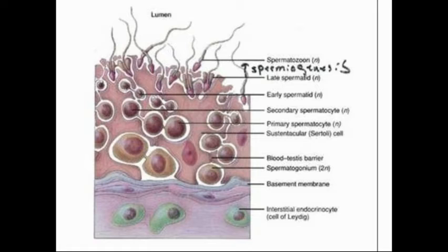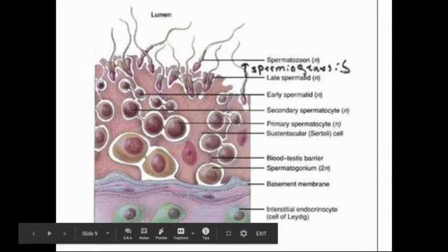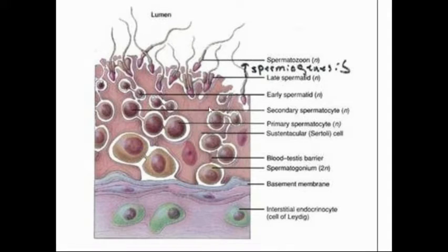Here we see a cross-section of a single seminiferous tubule. If you were to look down the end of a garden hose, it would look like a round hollow circle — the hollow space here is called the lumen. Stem cells near the outer edge produce sperm, which work their way inward through development until they reach the interior surface of the tubing and are released into the lumen for transport.